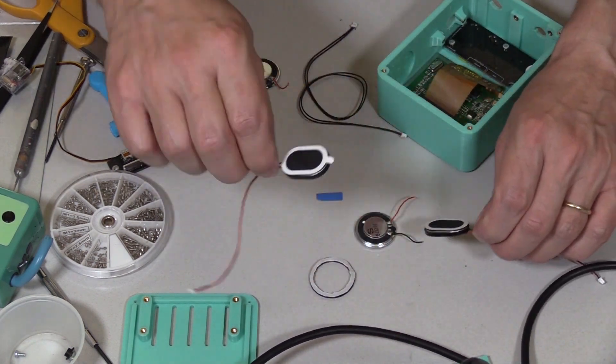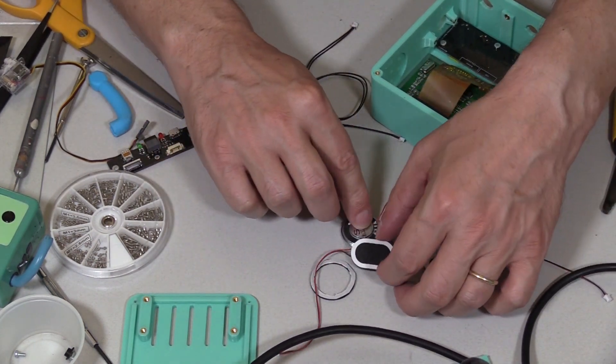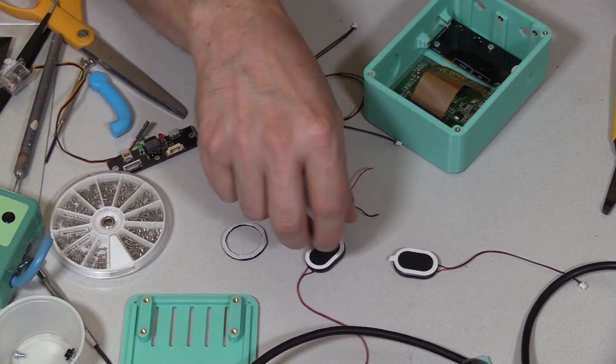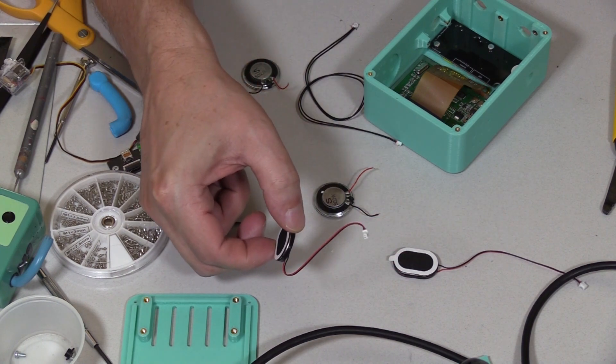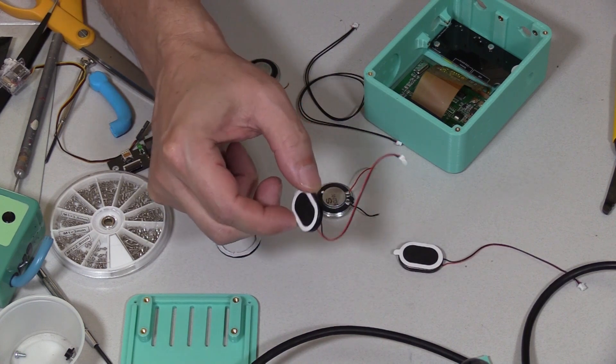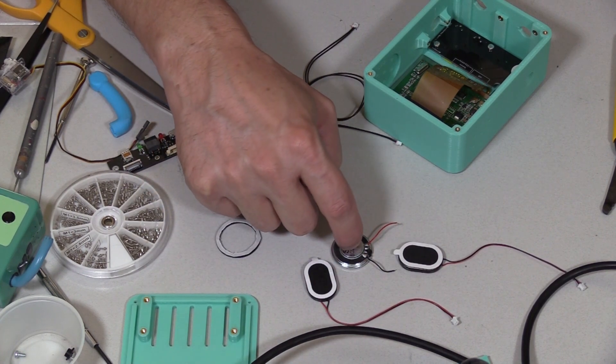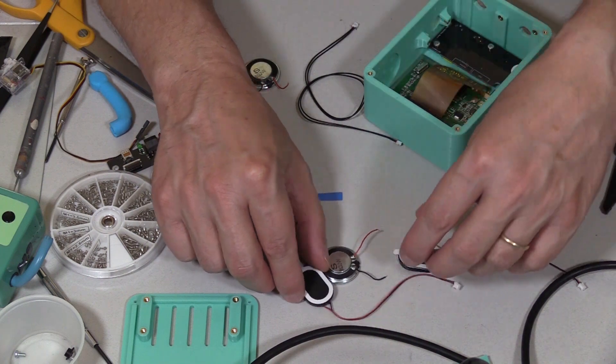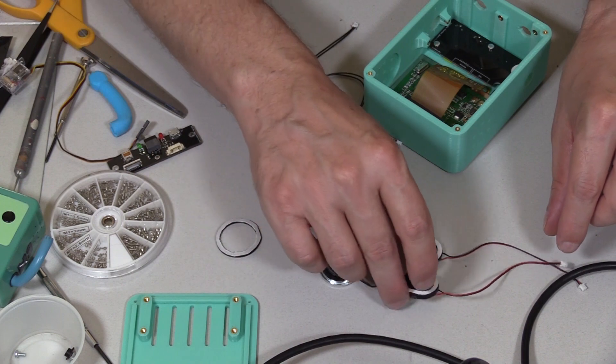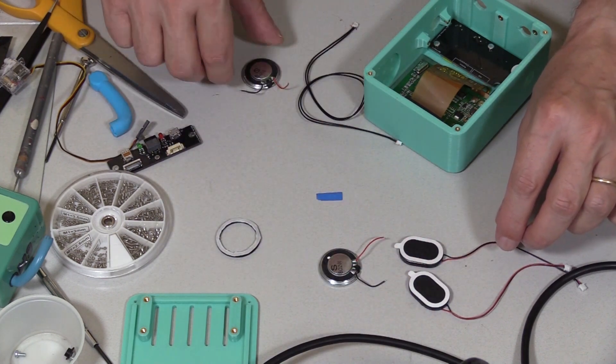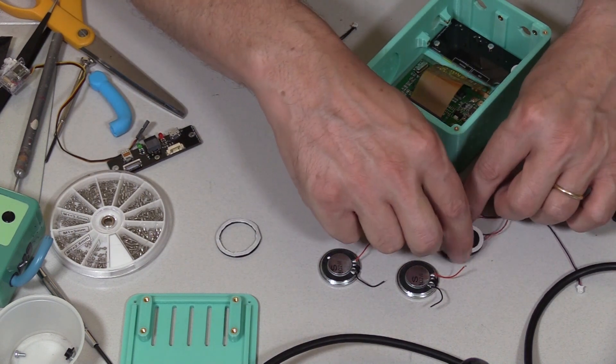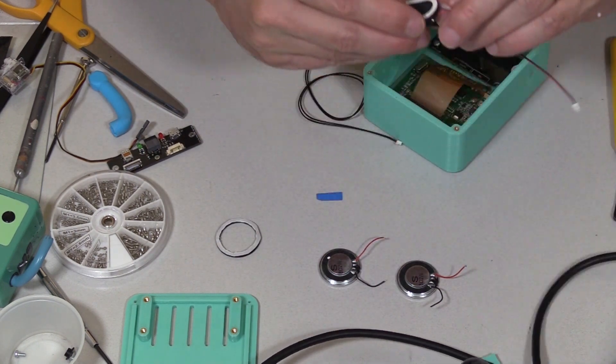The other option is Adafruit sells these little speakers here which are about the same diameter, slightly different shape. They're really cool speakers because they already have the connector on there, which is a Molex picoblade. Downside is these are a half watt, these are 2 watt. These will work, you have this nice adhesive already put on there, a little tab for taking it off, the connector, but they're not quite as powerful as I would like.